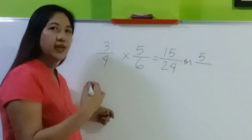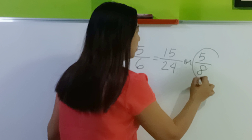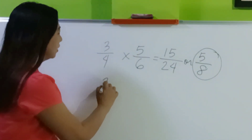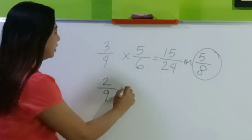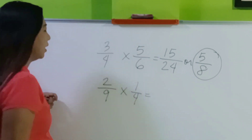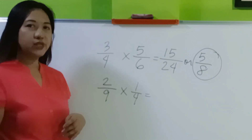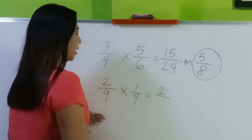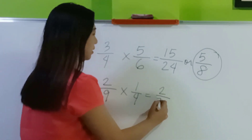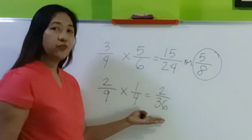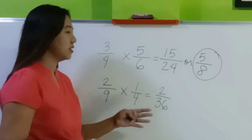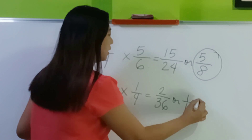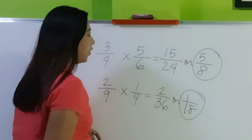So 15 divided by 3 is 5, and 24 divided by 3 is 8. So 5 over 8 is the final answer. Another example: 2/9 times 1/4. Multiply the numerators: 2 times 1 is 2. Multiply the denominators: 9 times 4 is 36.